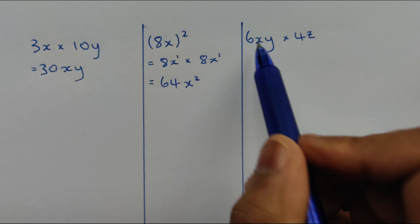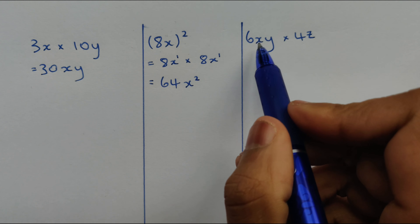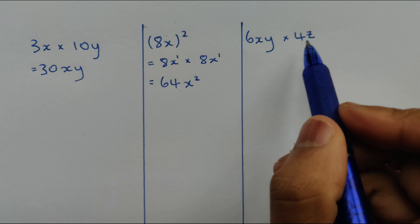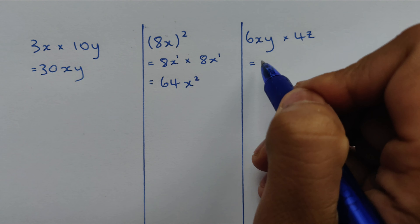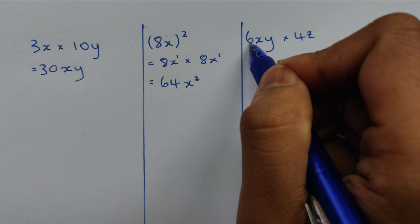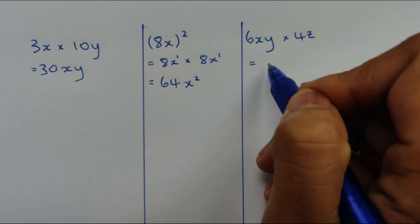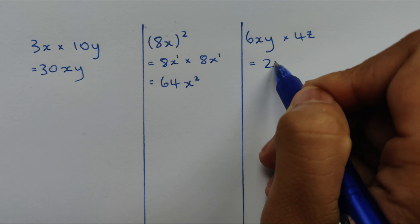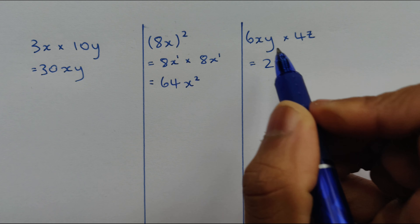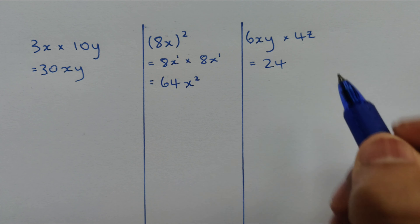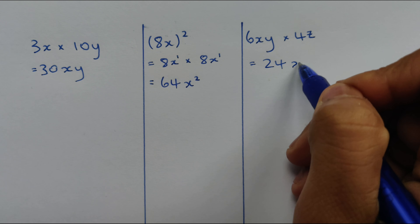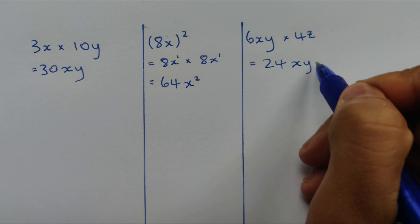Next example: 6xy times 4z. Coefficients first — 6 times 4 is 24 — and then xy times z is xyz. So our answer is 24xyz.